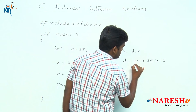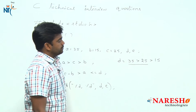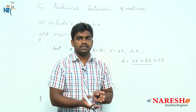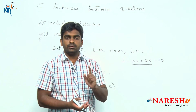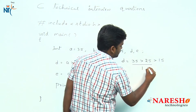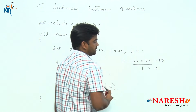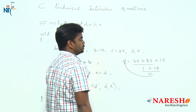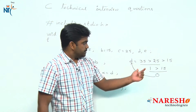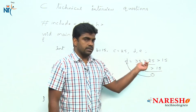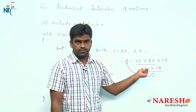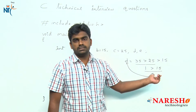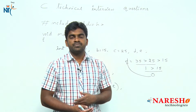First it checks only the left part: 35 is greater than 25 — the condition is true. Whenever a relational operator returns true, it returns the value 1. So it returns 1, and then 1 is greater than 15 — that condition has failed. So it returns 0.